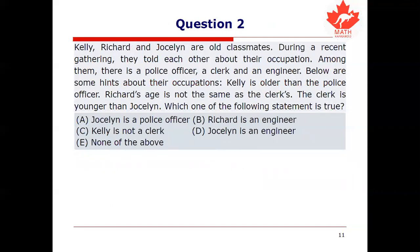Next question. Kelly, Richard, and Jocelyn are old classmates. During a recent gathering they told each other about their occupations. Among them there is a police officer, a clerk, and an engineer. We know Kelly is older than the police officer, Richard's age is not the same as the clerk's, and the clerk is younger than Jocelyn. Which of the following statements is true? Is it A that Jocelyn is a police officer, B that Richard is an engineer, C that Kelly is not a clerk, D that Jocelyn is an engineer, or are none of the statements true?